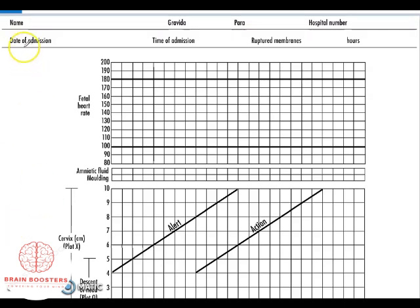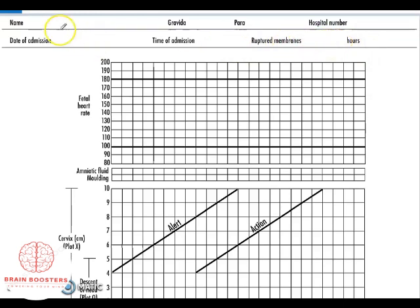The first part contains maternal details: the name of the mother, gravida, para, hospital number, date of admission, time of admission, and ruptured membranes in hours. Gravida simply means the number of pregnancies the woman has had, and para is the number of live children the woman has delivered.